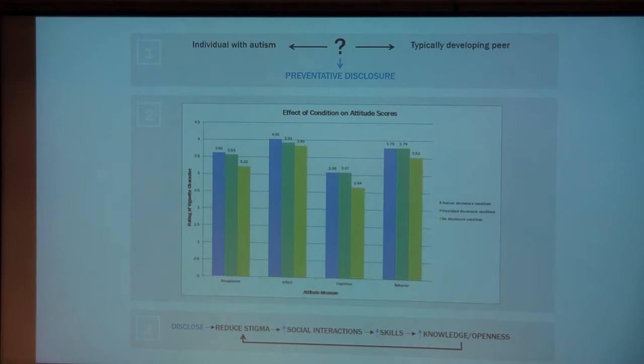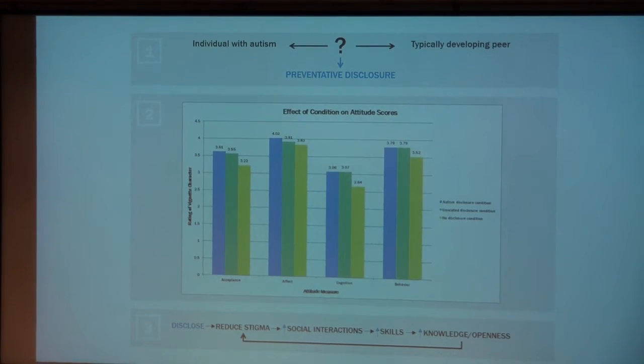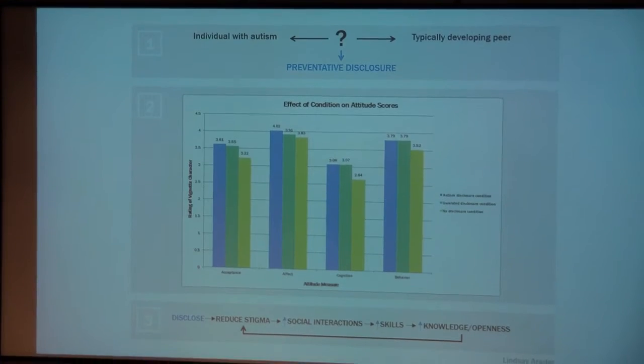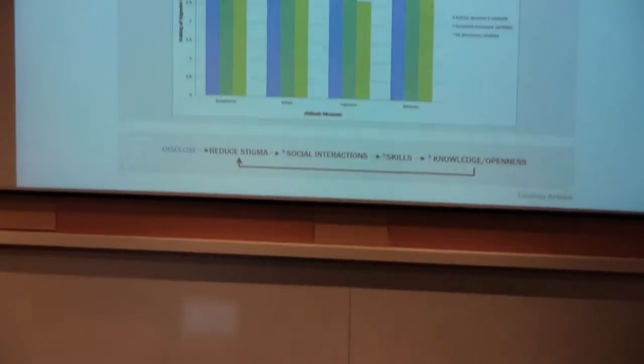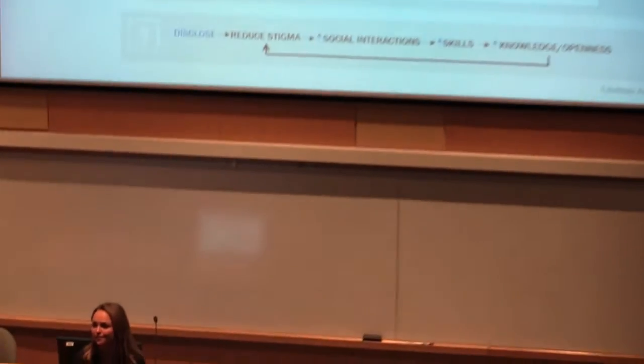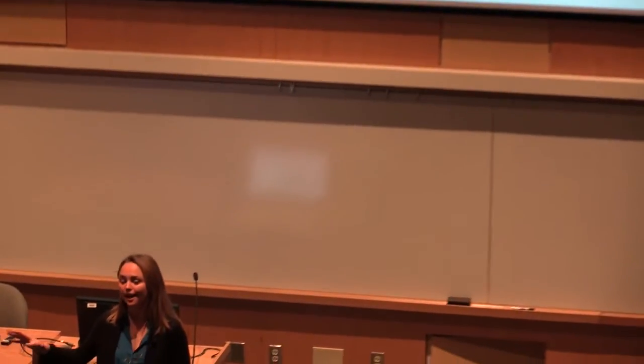As a result, it is unlikely that these two groups will ever engage, which leaves the individuals with autism socially isolated and the typically developing peers uninformed and therefore stigmatizing.